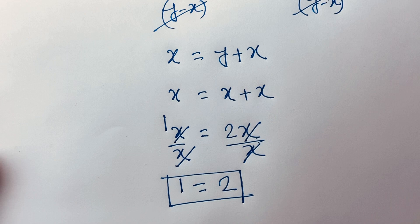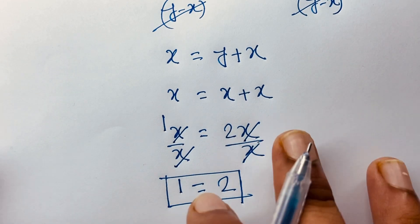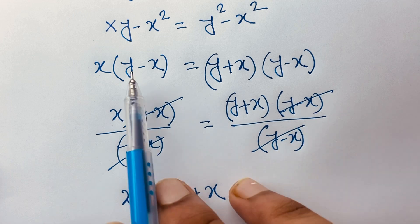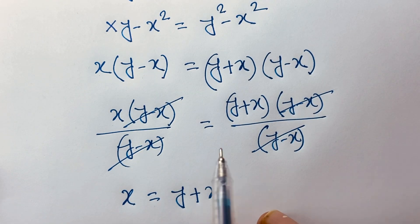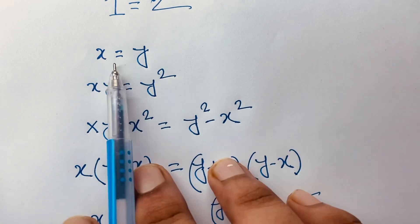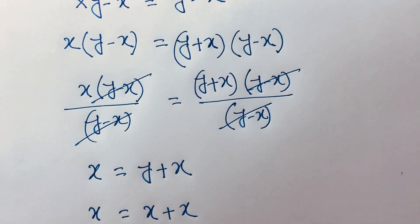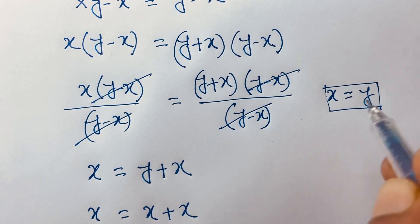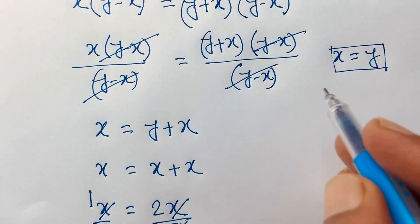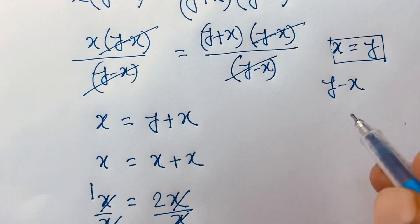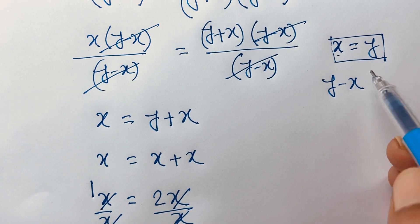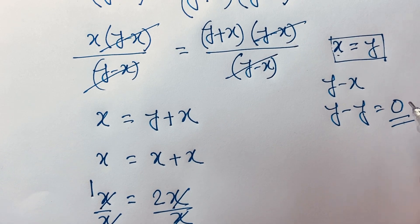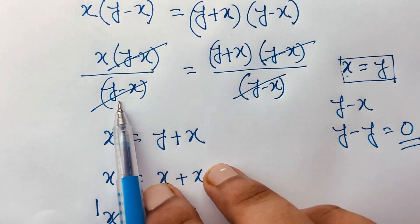But the question is: where is our mistake? Our mistake is here — I divided by (y minus x). Remember that x is equal to y, so y minus x means y minus y.